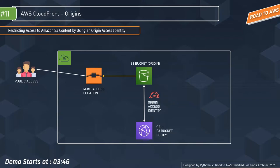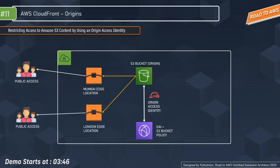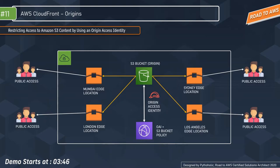You might ask: what if I make the bucket public? If you make the bucket public, then everyone will be able to access the object. If not, only the users who are part of the OAI will be able to access the content — whether they are in London, Sydney, or Los Angeles. If they have access using the origin access identity, they will be able to access the S3 bucket and its contents.